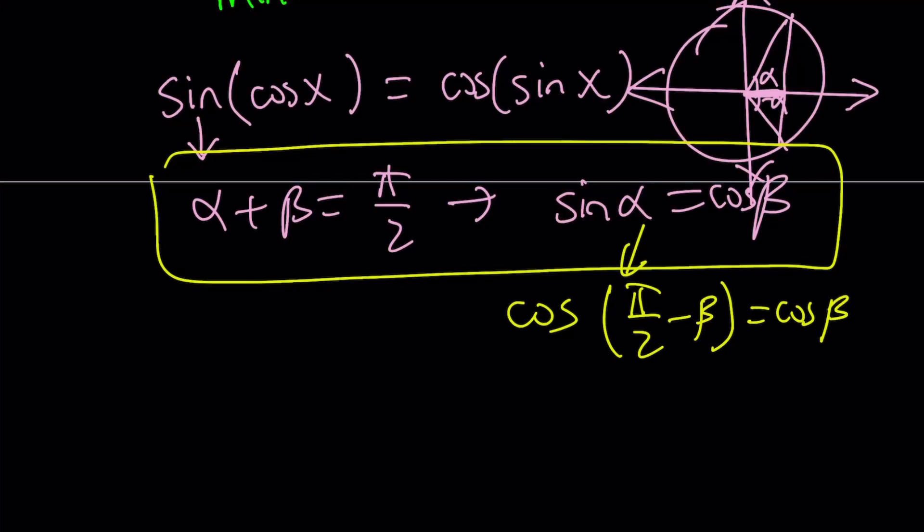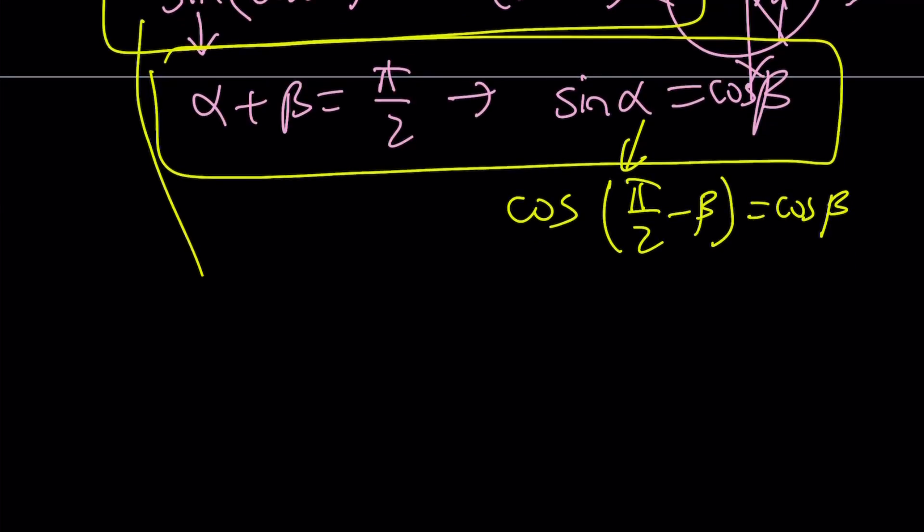Let's go ahead and do the same thing here. I'm going to replace cosine x with π/2 minus cosine x, which is the angle, which is the complementary of this angle. So it's going to look like this: cos(π/2 - cos x). So this is the complement of cosine x.